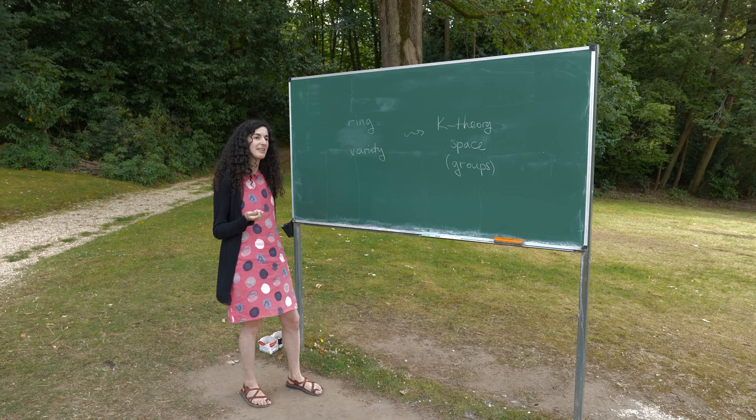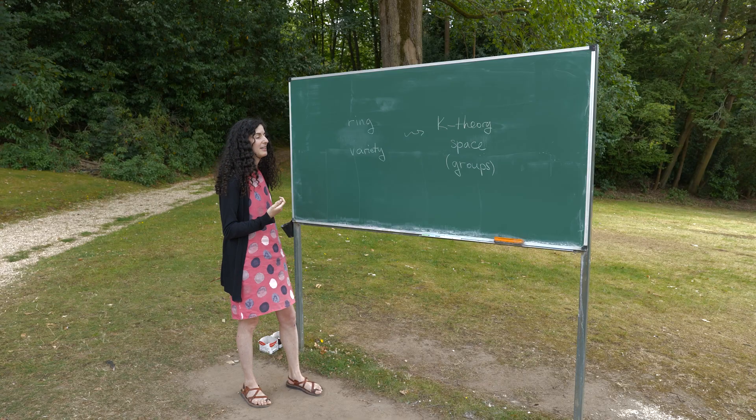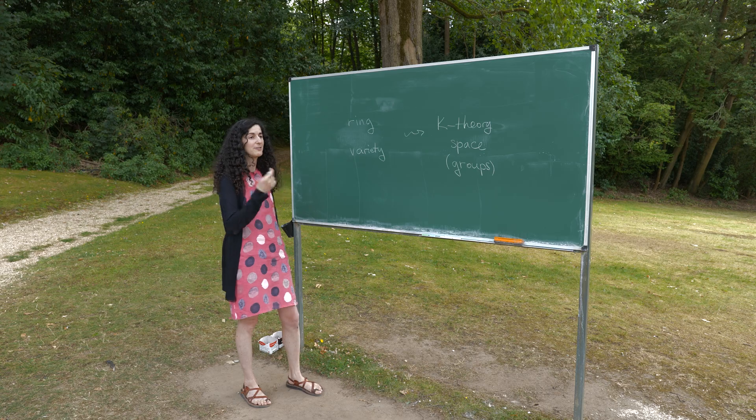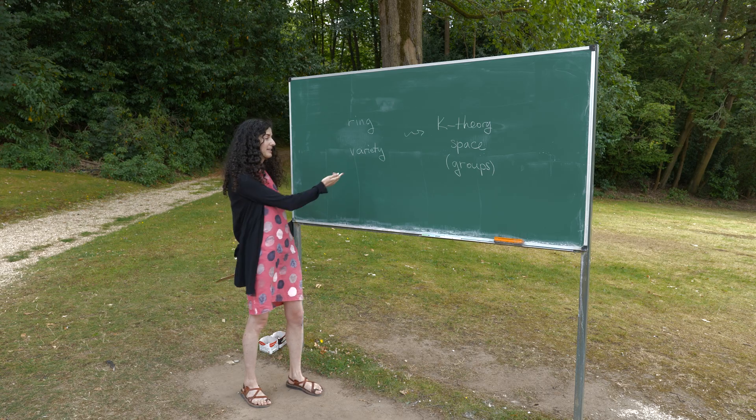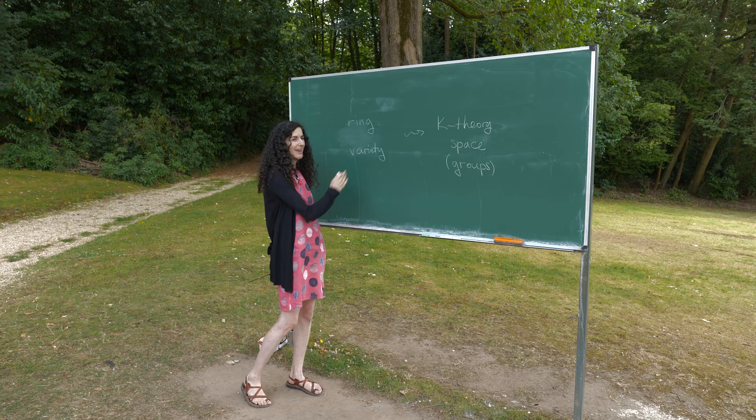For an invariant like K-Theory, you'd like to have certain rules that let you compute its value on certain varieties from a given one. Today we will talk about examples of such rules and an unexpected connection between them.